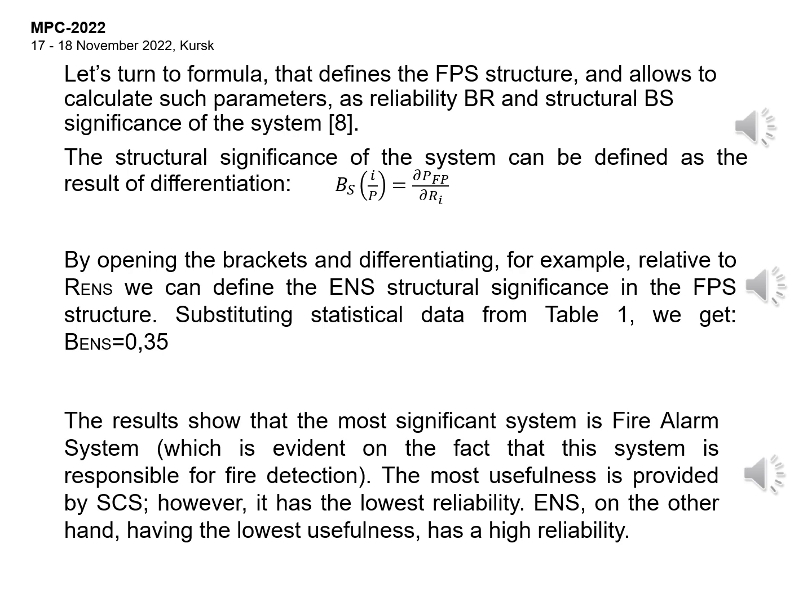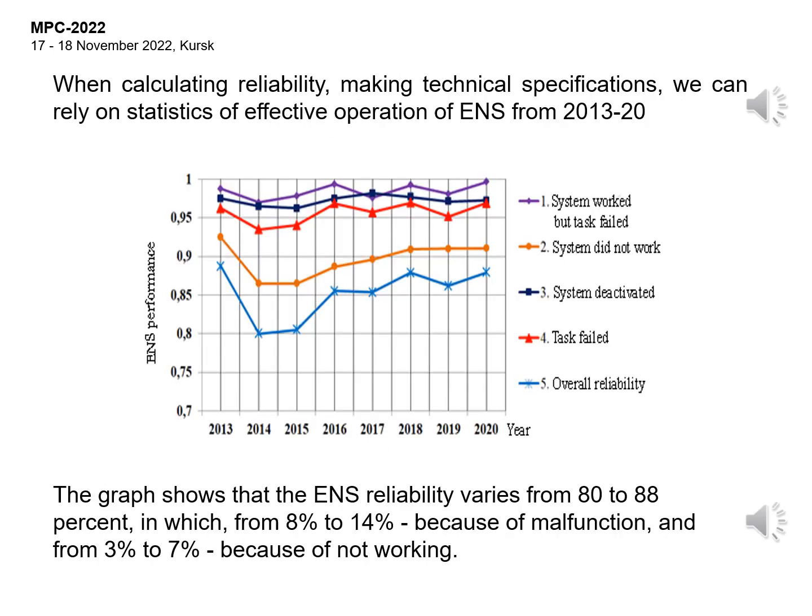The results show that the most significant system is the fire alarm system, which is evident from the fact that this system is responsible for fire detection. The most usefulness is provided by SCS; however, it has the lowest reliability. ENS, on the other hand, having the lowest usefulness, has high reliability. When calculating reliability and making technical specifications, we can rely on statistics of effective operation of ENS from 2013 to 2020.